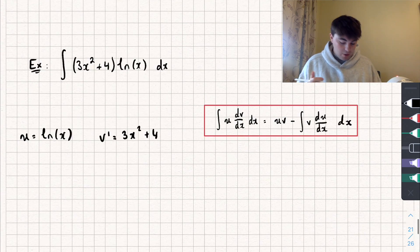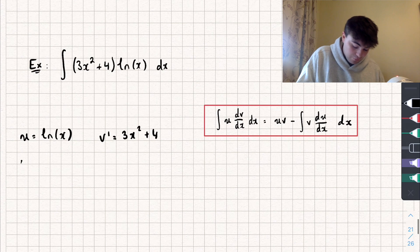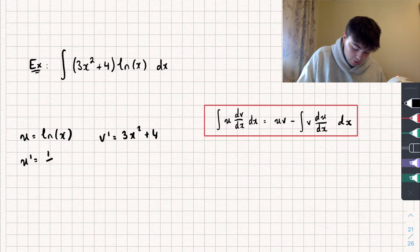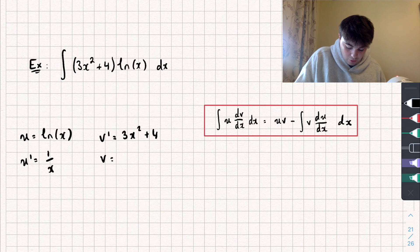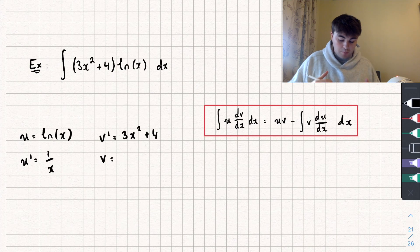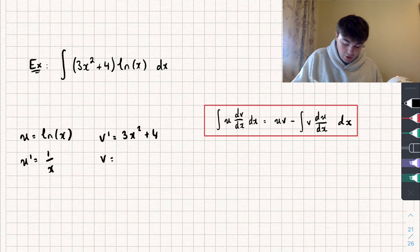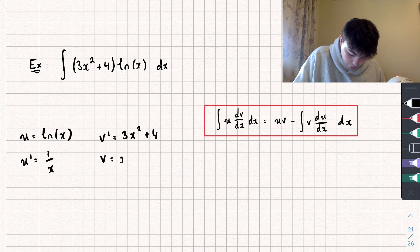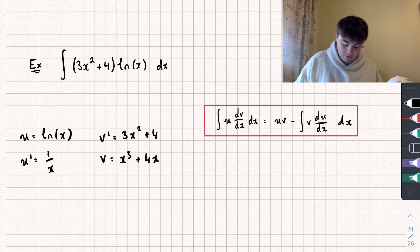From here we take the derivative of u — so u' is just 1 over x, which is nice and easy. Then we integrate v': we add 1 to the power and divide by the new power, so 3x cubed divided by 3 is just x cubed, and 4 integrates to 4x.